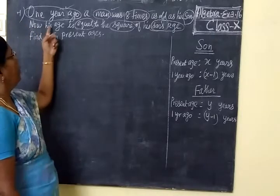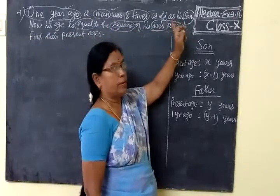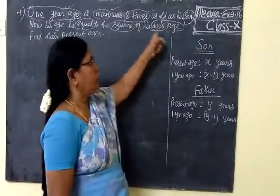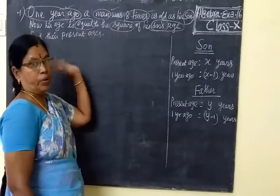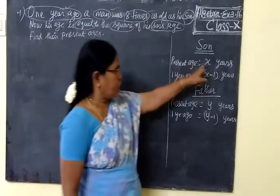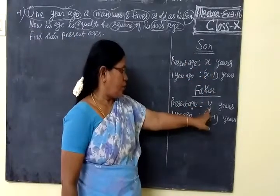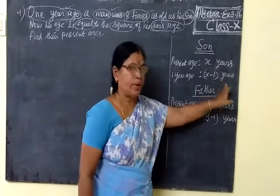It is given: 1 year ago a man was 8 times as old as his son. Father's age, son's age. Son's age 1 year ago is x minus 1. Father's age 1 year ago is y minus 1. For example, x and father's age y, 1 year ago.